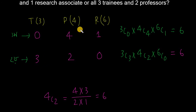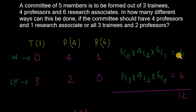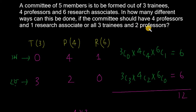Three shangkok trainee ebong four shangkok professor - duটি khetre sampurna alada. Tahole amra bolte parbo total = 6 plus 6 = 12. Amra eduti sankhyar ekhane sombhobe jog korchi karon eduti khetre hoche sampurna alada. Tahole 12 shangkok upay royeche - 4 shangkok professor ebong 1 shangkok research associate othoba 3 shangkok trainee ebong 2 professor bachai kore amra committee goran korbo. Total 12.